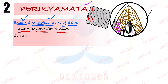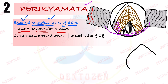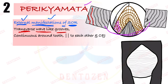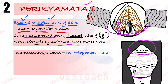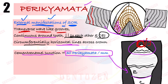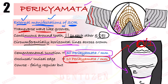If we extend these lines all over the surface of the tooth, they appear as continuous lines around the tooth, parallel to each other and also parallel to the cemento-enamel junction. They run circumferentially around the whole circumference of the tooth as horizontal lines. These lines are more numerous at the cemento-enamel junction — about 30 perichymata per millimeter — but in occlusal and incisal areas, the number decreases to about 10 perichymata per millimeter. The lines are fairly regular in their wave-like course, but in the cervical region they can become irregular.